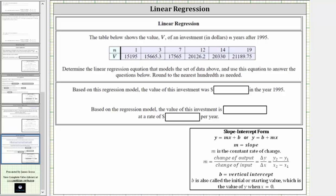The table below shows the value V of an investment in dollars n years after 1995. Determine the linear regression equation that models the set of data above and use this equation to answer the questions below, round to the nearest hundredth as needed.